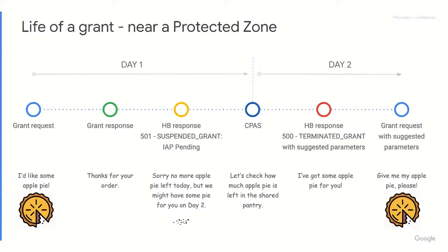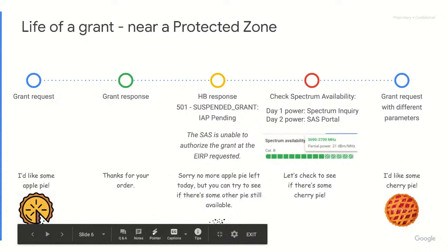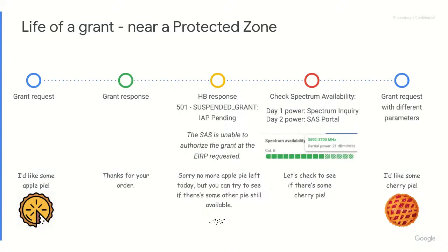What happens if you can't wait for day two for your pie? In that case you can request a new grant with different parameters. To help determine what those parameters could be, you can check availability of spectrum using the Spectrum Inquiry request, or you can use the SASS portal. Please note that the Spectrum Inquiry request will give you the power available today, whereas in the SASS portal you can see the power available on day two.